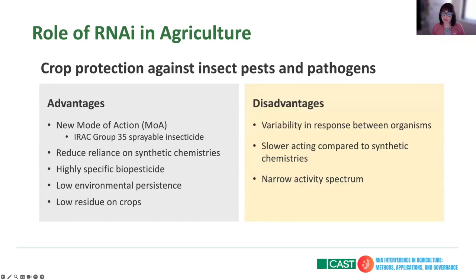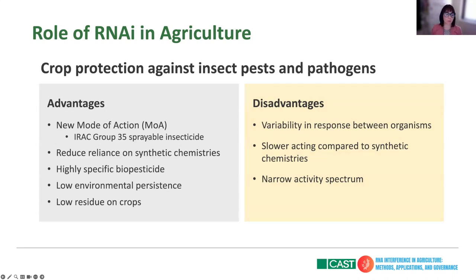Some of the disadvantages are that there is variability in response between organisms. We initially thought it would work well on all organisms, but later found that is not the case. Another disadvantage is that it is slower acting compared to synthetic chemistries, and it has a narrow spectrum of activity. This is both an advantage and a disadvantage — an advantage because we can target a specific pest without affecting others, but at the same time we are only targeting one or two species compared to synthetic pesticides that can target multiple pests simultaneously.